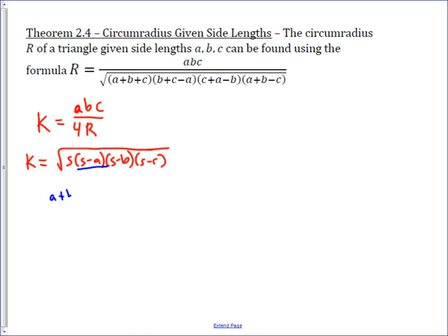S is (A + B + C) / 2, the semi-perimeter, with A, B, and C representing the three sides. For S minus A, you write A as 2A/2 to get common denominators, and A + B + C minus 2A gives us (B + C - A) / 2, because A minus 2A cancels to give that term.